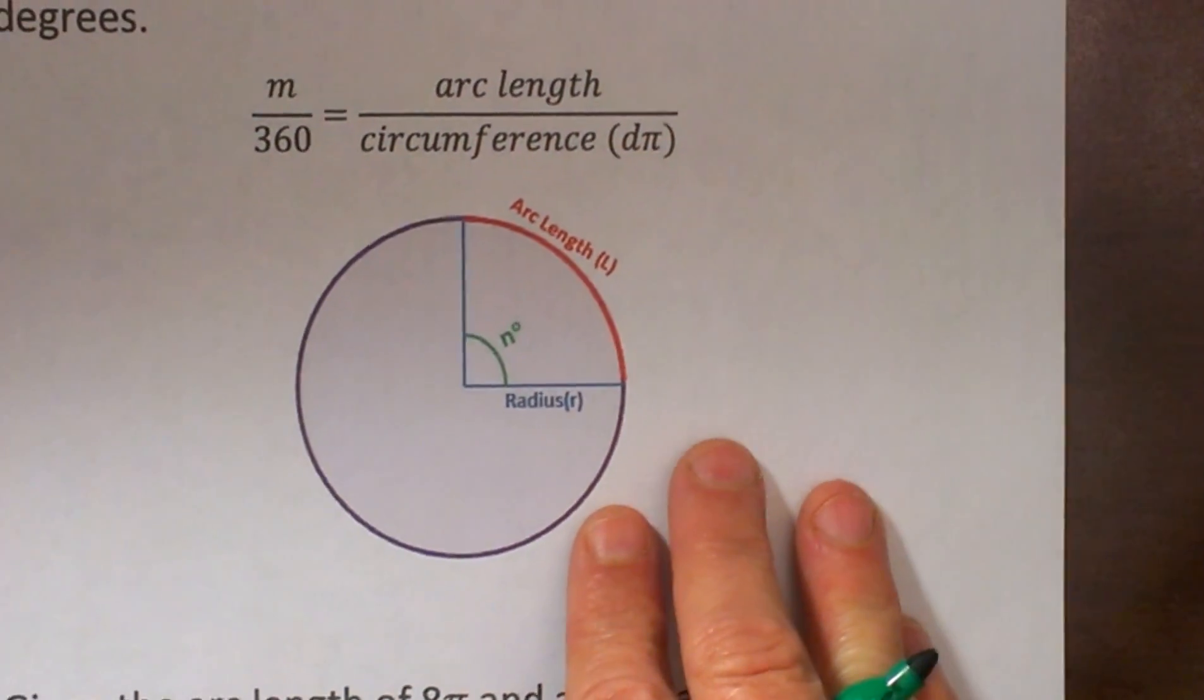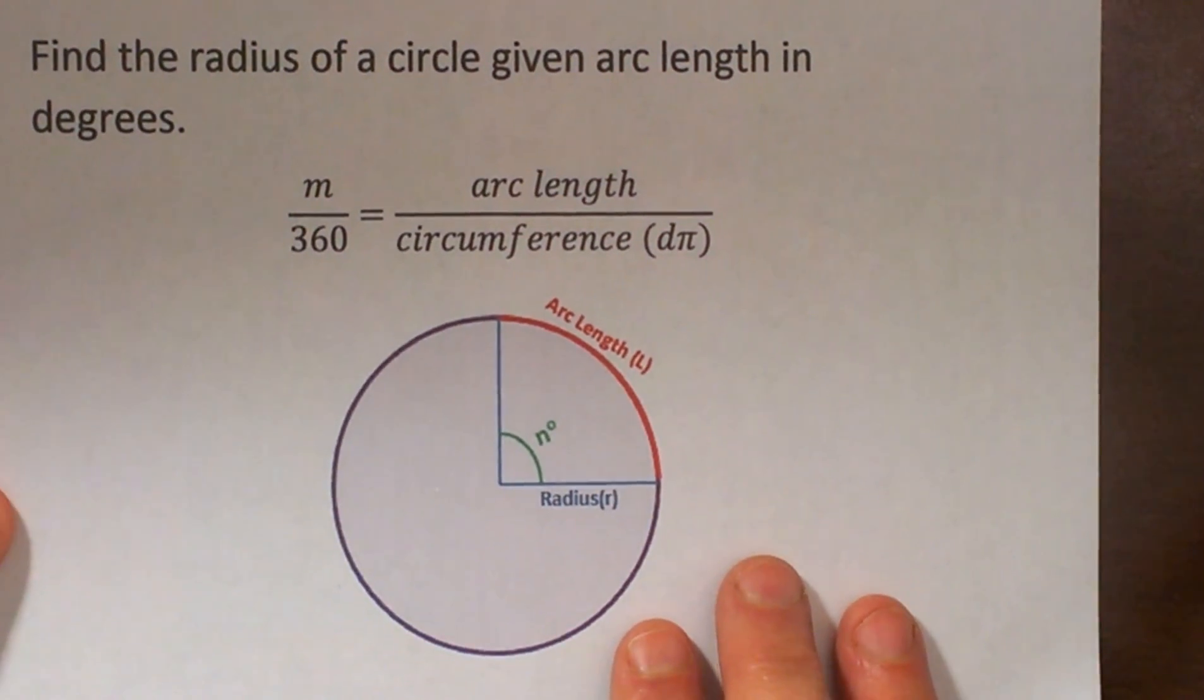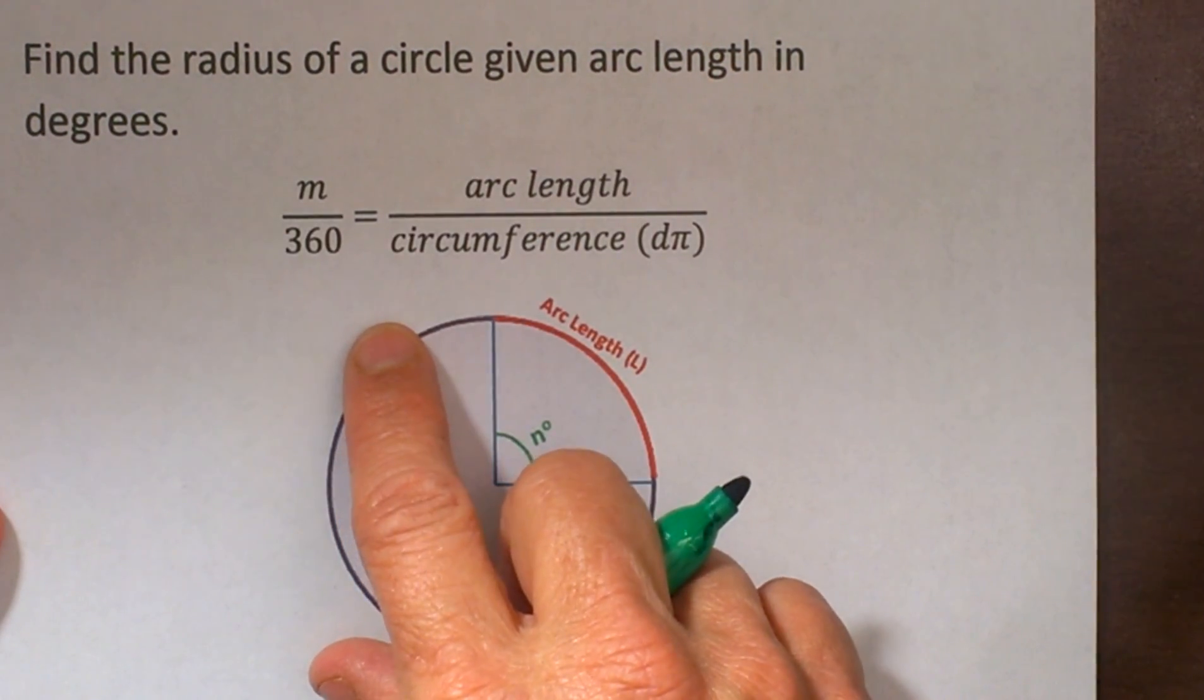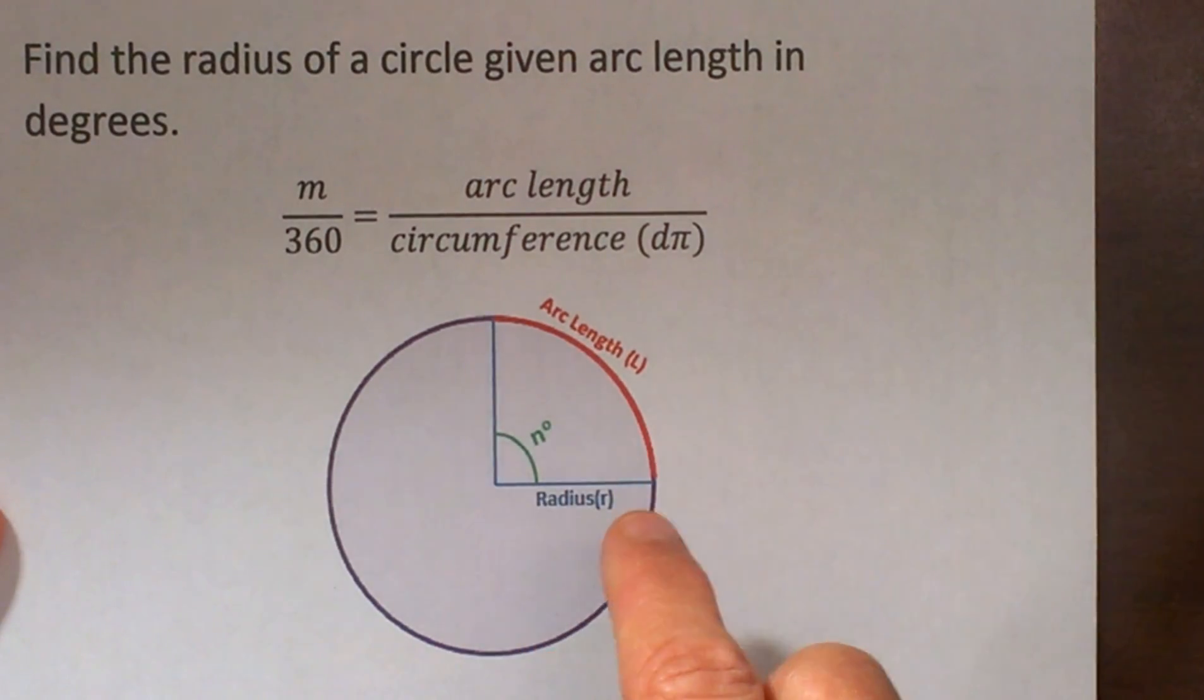Now this formula is a little bit different. There are a couple of different ways you can do it but I have found this is the easiest way. What you want to do is you want to set up a proportion where you take the measure of the central angle...